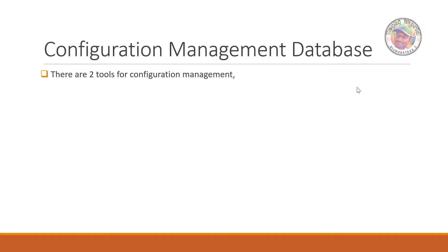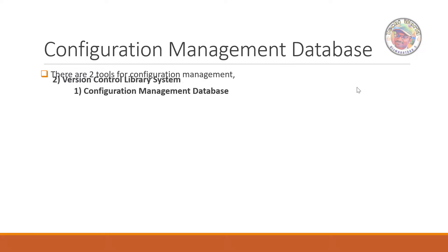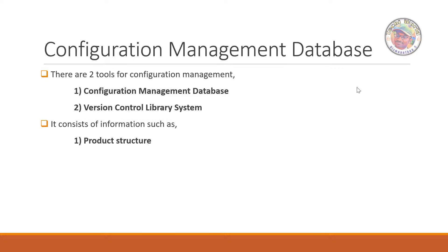There is a tool called the configuration management database (CMDB). Looking at the configuration management plan and tools to track and control various versions of the product, there are two types: the configuration management database and the version control library system. The CMDB contains information such as product structure, working flow, and operational structure.